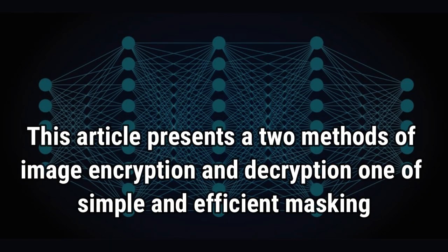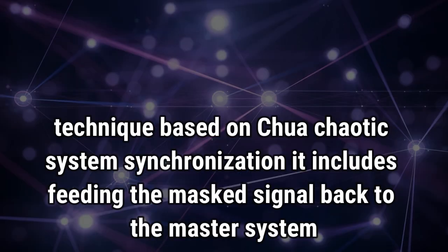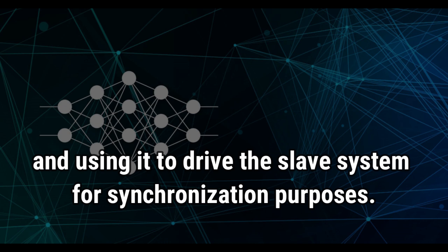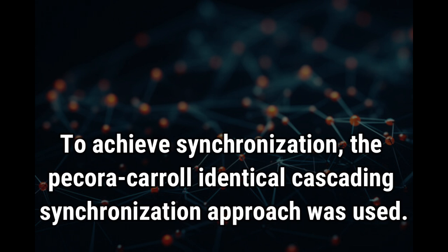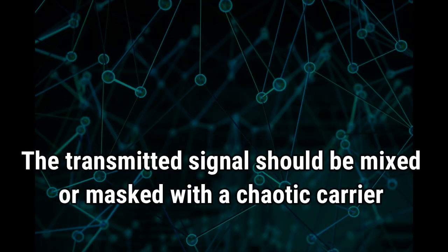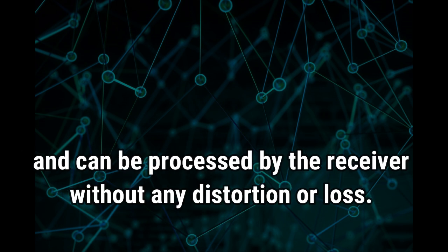This article presents two methods of image encryption and decryption. The first is a simple and efficient masking technique based on Chua Chaotic System Synchronization. It includes feeding the masked signal back to the master system and using it to drive the slave system for synchronization purposes. To achieve synchronization, the Pecora-Karol Identical Cascading Synchronization approach was used. The transmitted signal is mixed or masked with a chaotic carrier and can be processed by the receiver without any distortion or loss.